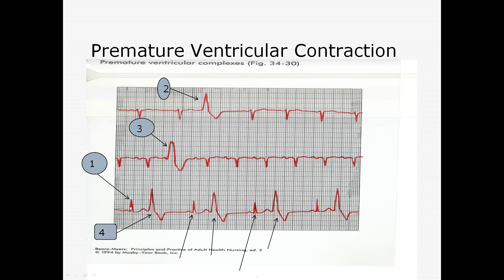So it looks like we have one, two, three, possibly four different areas it's coming from in the heart. When we have a premature contraction, no blood is leaving the ventricle. So if this was a six-second strip and you said what are the beats per minute, those premature beats wouldn't count — nothing is leaving the heart. Those don't count as regular beats — nothing is happening.